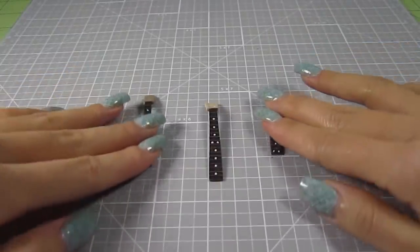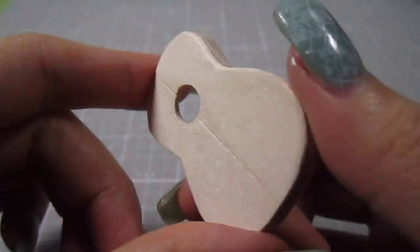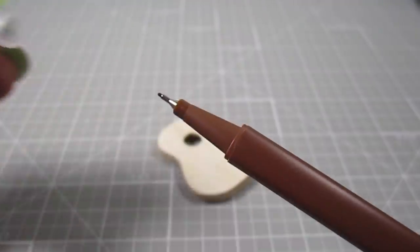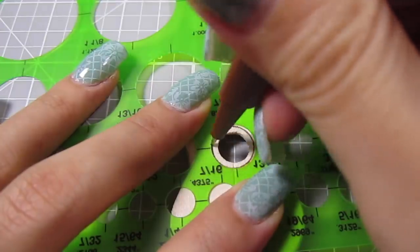Yup, that's three headstocks. We're making three mini guitars. The design on the first one will be very simple. I use a brown microtip pen to draw a circle around the sound hole.